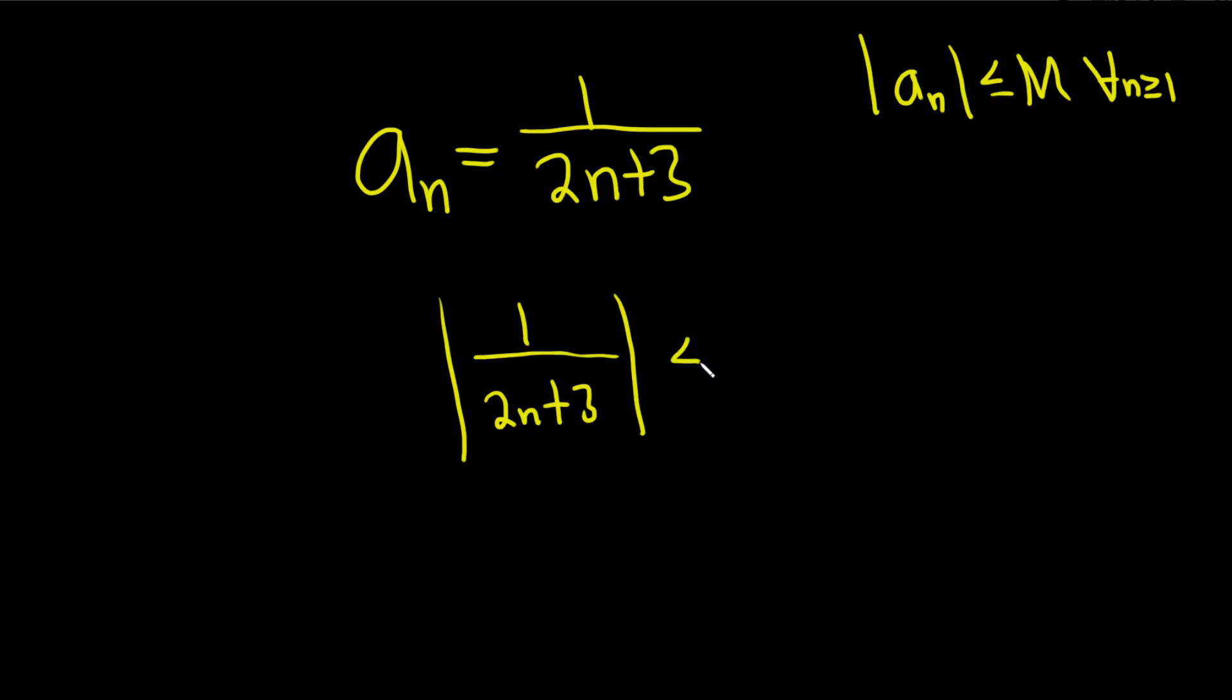So we can certainly do this. 1 over, and then here we can drop the 3 and the reason we can drop the 3 is because this fraction here on the left is smaller than this one because the bottom piece is bigger. So whenever you have a 3 here on the bottom it makes the bottom bigger, it makes the fraction smaller. So we can drop the 3 and we get a bigger fraction.